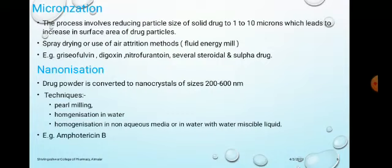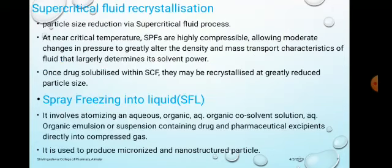Next is nanonization — 'nano' indicates small particle size, around 200 to 600 nanometers. Techniques used to nanonize compounds include pearl milling, homogenization in water, and homogenization in aqueous media or in water with water-miscible liquids. Examples of drugs which can be nanonized include amphotericin B.